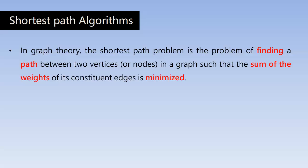In graph theory, the shortest path problem is the problem of finding a path between two vertices or two nodes in a graph such that the sum of the weights of its constituent edges is minimized. That means we are going to find the shortest path between a pair of nodes so that the weights of all the edges between those two nodes must be minimized. This is the objective of finding the shortest path.